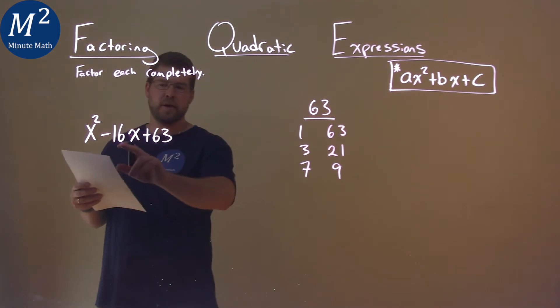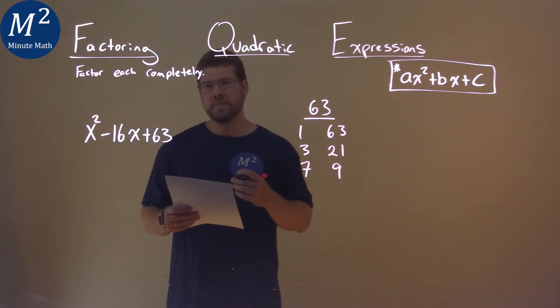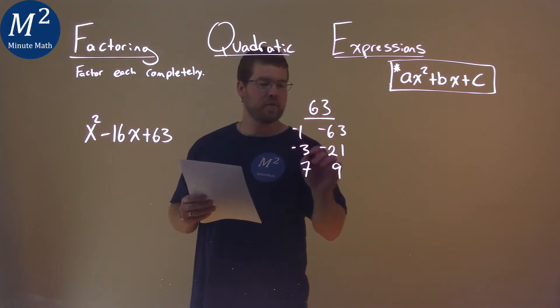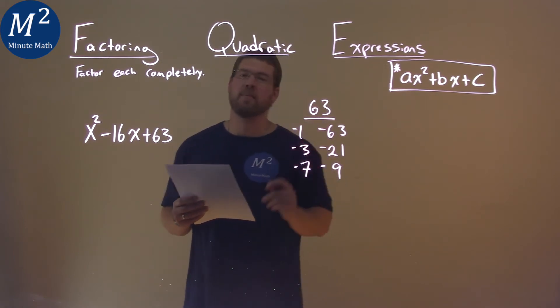So now I look at my b value. It's a negative 16. So that gives me the clue that both of these numbers here, when multiplied, have to be negative to get a positive 63.